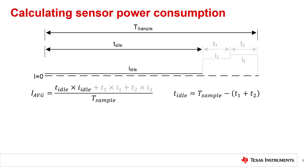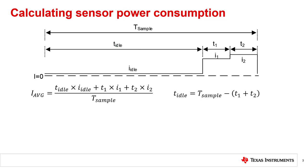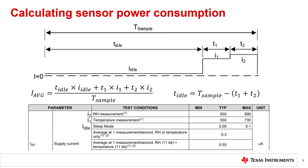The first term in the numerator of this relationship for the average power consumption represents the low current idle period. To calculate T-idle, we can simply use the difference between the total sample time and the total conversion time. The second term in the numerator is for the first conversion period, and the third term is for the second conversion period. Consider the sum of all three of these terms over the total sample period as a simple way to estimate the total average current. The values for I1, I2, and I-idle can all be obtained from the datasheet electrical characteristics table, shown here as an excerpt from the HTC2 family of devices.